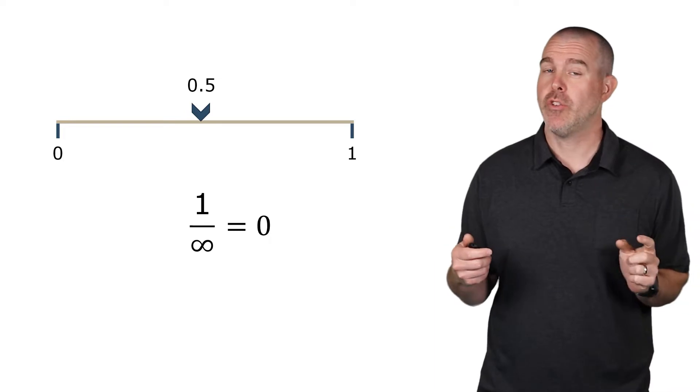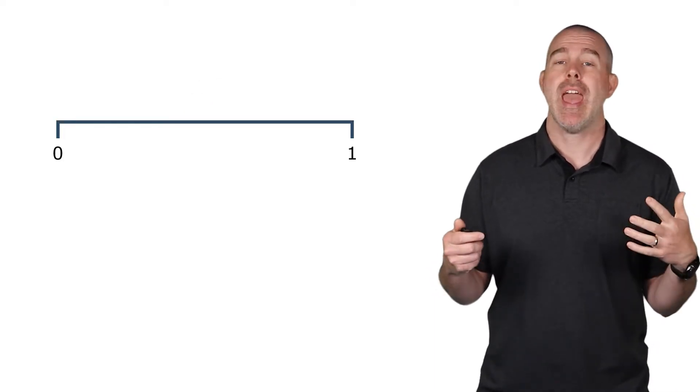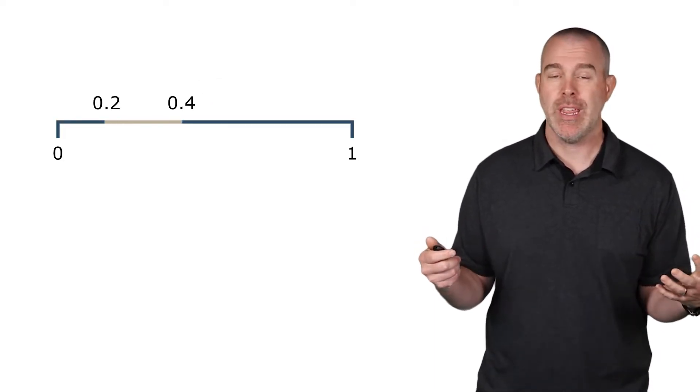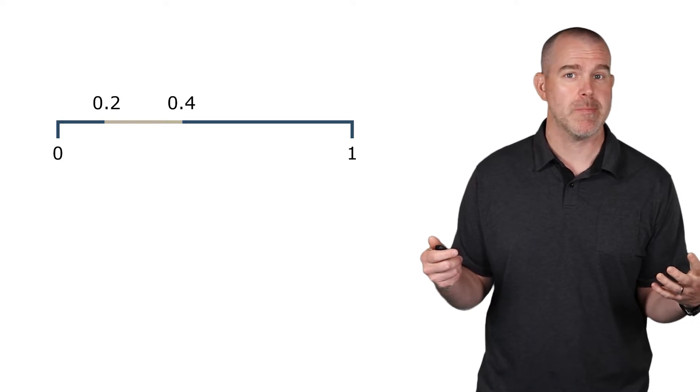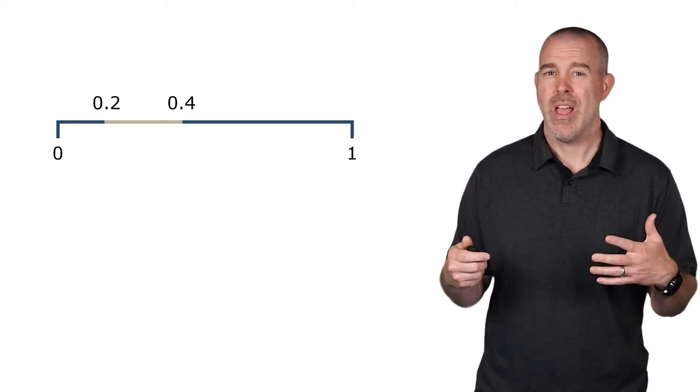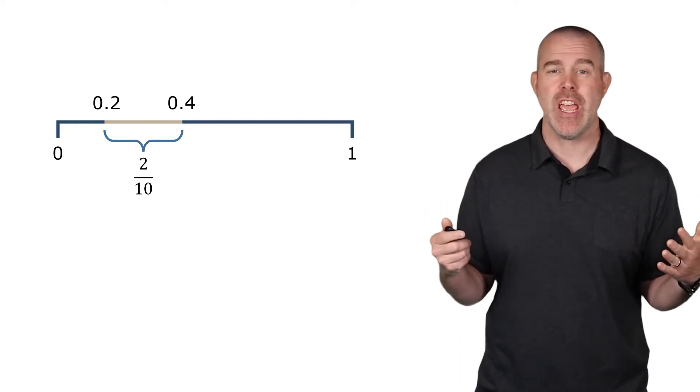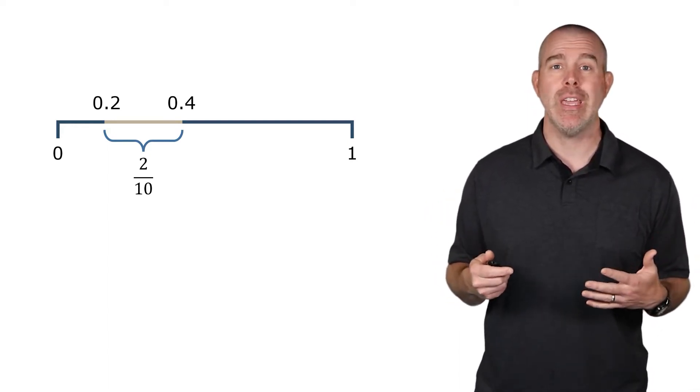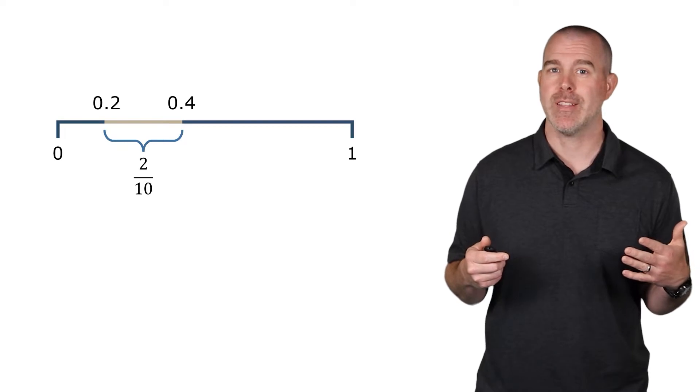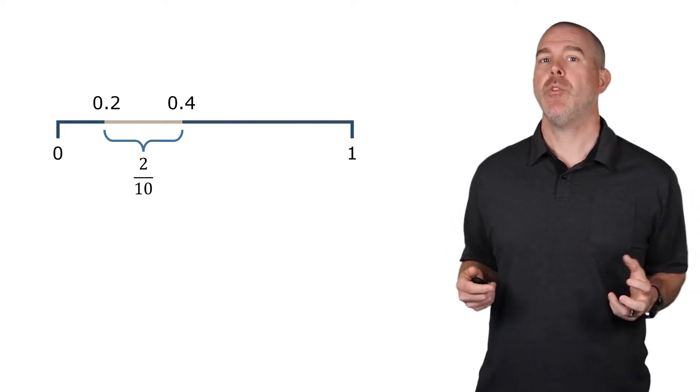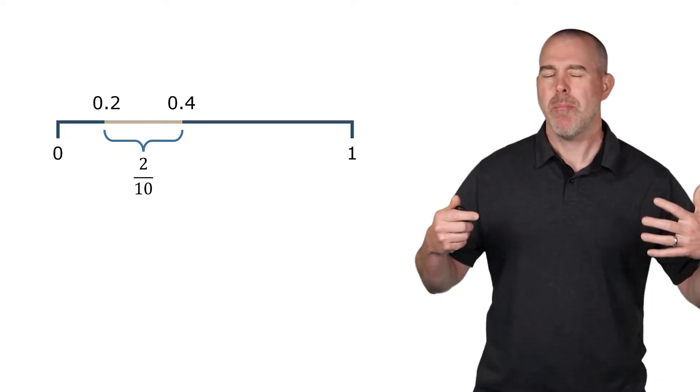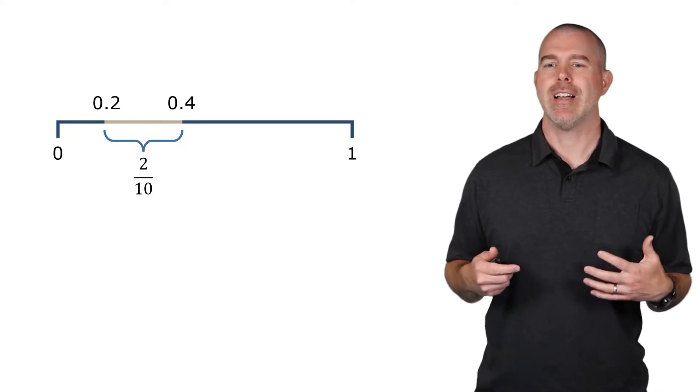Okay, well, how do we get probabilities then? The key is to look at an interval. What if we look at, say, anything between 2 tenths and 4 tenths? Well, now there's a width there of 2 tenths. There's a 2 out of 10 chance of getting a number between 2 tenths and 4 tenths. Okay, continuing with this, again, we're trying to build up some really important conclusion here.